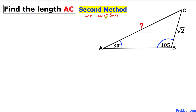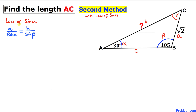Now for the second method using the law of sines. Looking at the triangle, I'll call angle A as alpha, angle B as beta, and angle C as gamma, with opposite sides a, b, and c respectively. The law of sines states: a over sine alpha equals b over sine beta. We want to find side b, which is our side length AC. Filling in: square root of 2 divided by sine of 30 degrees equals b divided by sine of 105 degrees.